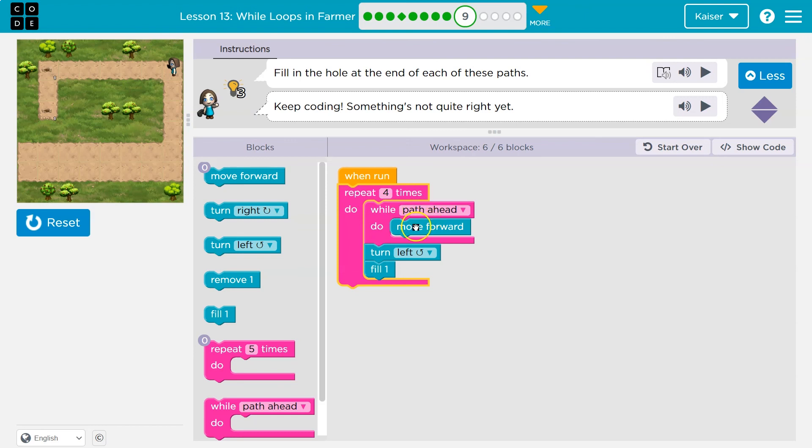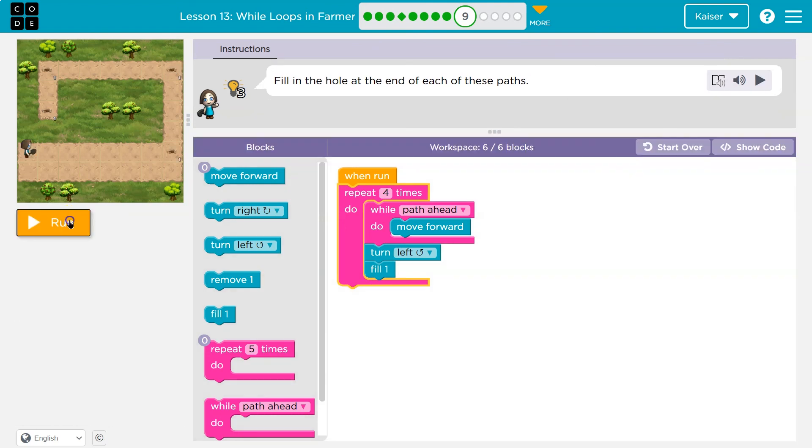So we'll do while path ahead once, then turn left, then fill, hit the bottom and back to the top. And this works similar to while path ahead, because this will keep repeating, except this repeats four times. This is going to repeat, move forward until we're at a corner, then turn left. All right, let's see what it does.